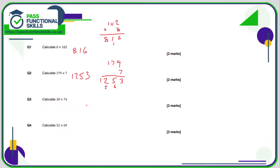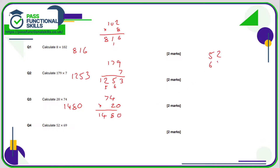20 times 74: I'm just going to do 74 multiplied by 2 and then stick a 0 on the end. 2 fours are 8, 2 sevens are 14 — so 148. If 74 times 2 is 148, then 74 times 20 is 1480.